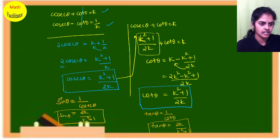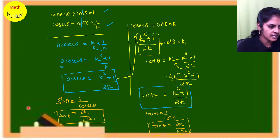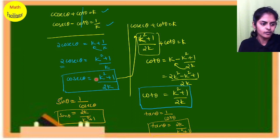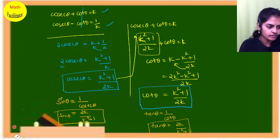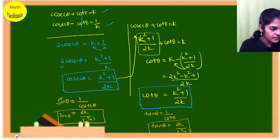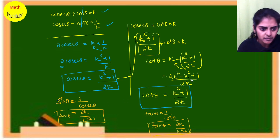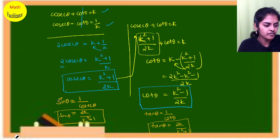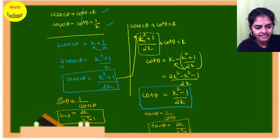Wait — the minus sign applies to the entire bracket (k² + 1), so it becomes minus k² minus one. That means: cot θ = (2k² − k² − 1)/(2k) = (k² − 1)/(2k). That was a sign error earlier, now corrected.